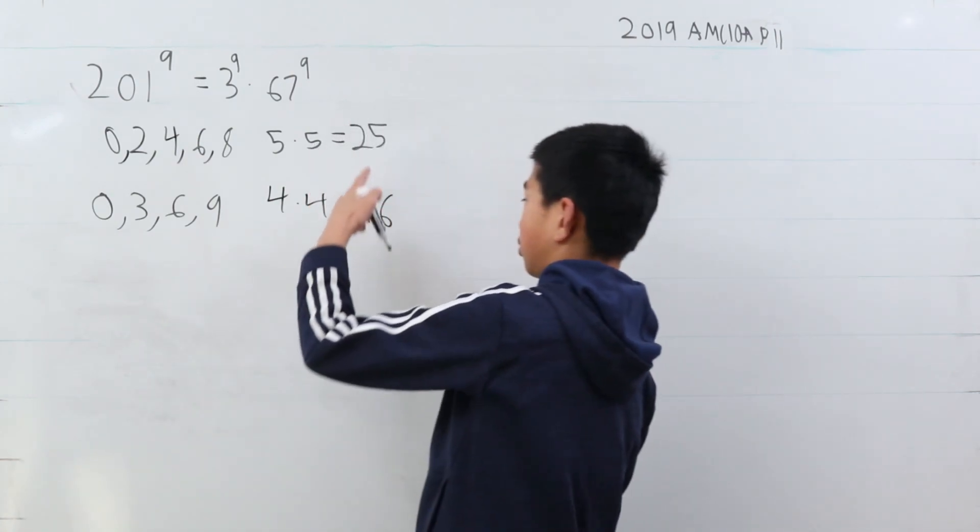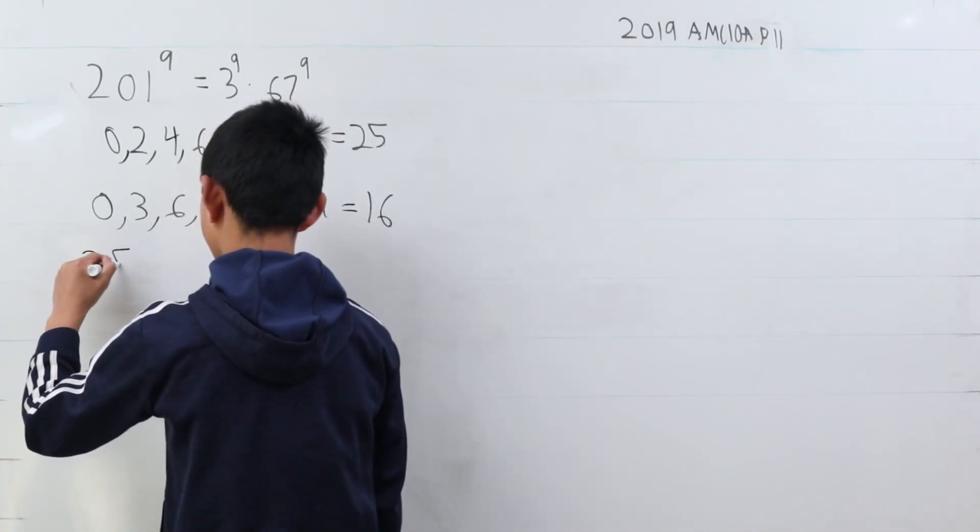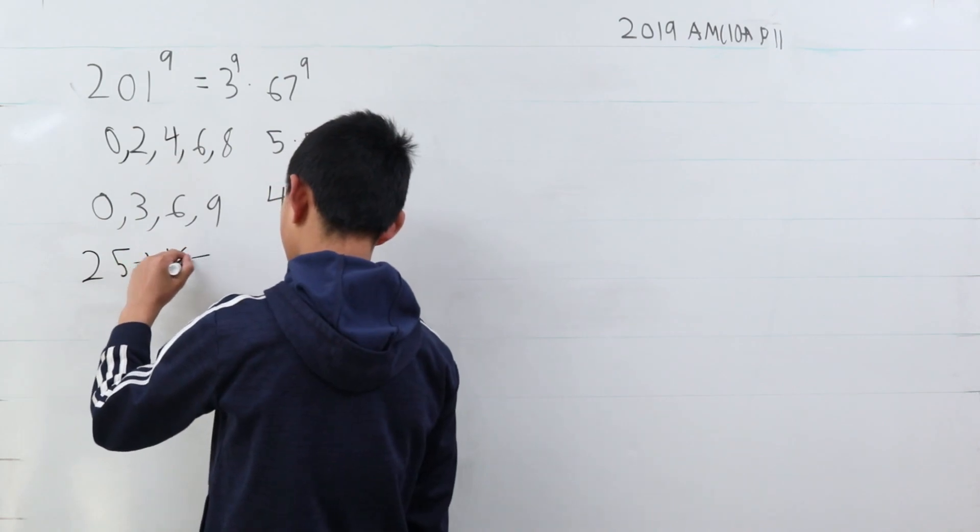And we sum up these two, so 25 plus 16 is 41.